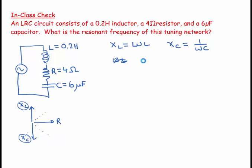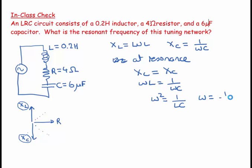at resonance, XL is going to be equal and opposite to XC. So I can say omega L is going to be equal to 1 over omega C. And so I get omega squared is equal to 1 over LC. So I get that omega is equal to 1 over the square root of LC.